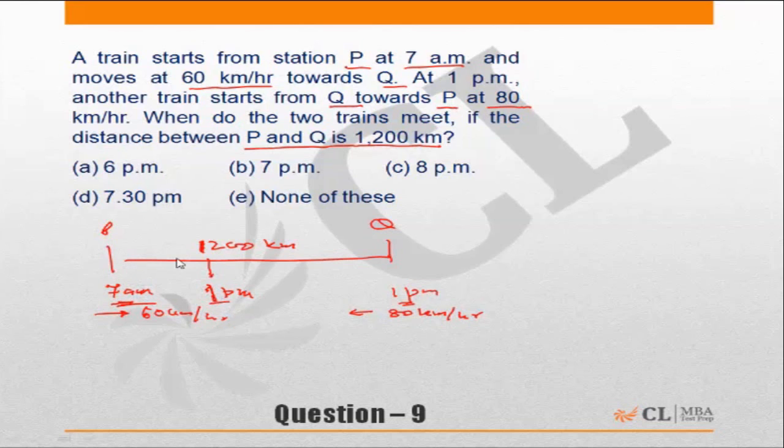So in 6 hours from 7am to 1pm at the speed of 60 km per hour, in 6 hours it would have covered 360 km. Or in other words, this distance is 360 km and hence the remaining distance is 840 km. I can say at 1pm the two trains are at a distance of 840 km.